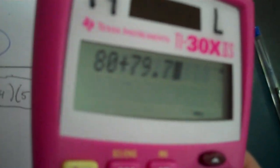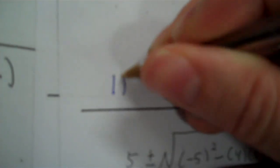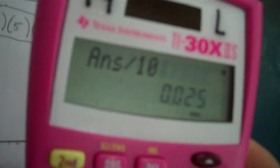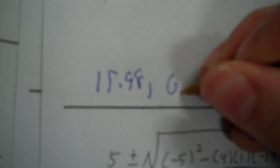That's what you put in so you can do the rest of the math. Take 80 plus 79.75, click equals, then divide by 10 — that's 15.98. Then 80 minus 79.75 divided by 10 is 0.03.